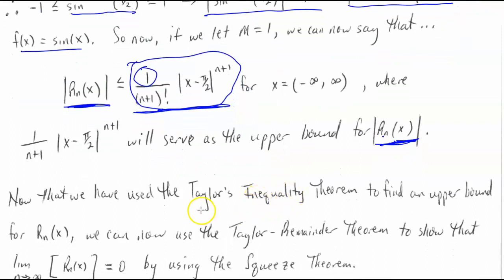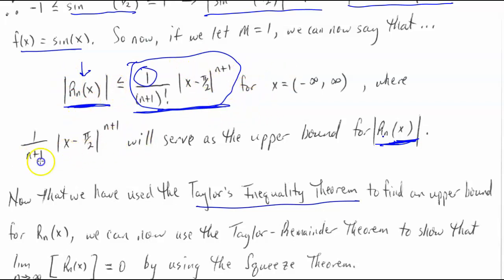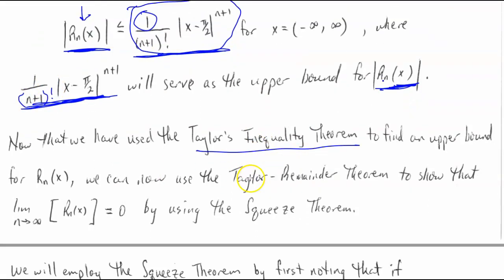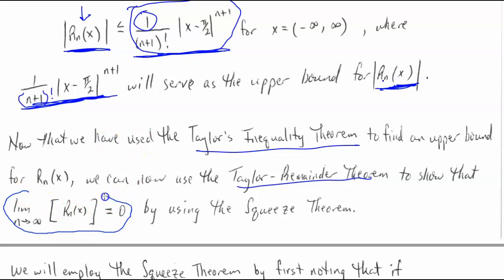So if we let M equal one, we're going to say that the absolute value of the remainder should be no more than what we see here — M times |X − a|^(N+1) divided by (N+1) factorial, with M = 1. This serves as the upper bound for the error. So using Taylor's Inequality Theorem, we've found an upper bound for what R sub N of X should be, which equals |X − π/2|^(N+1) divided by (N+1) factorial.